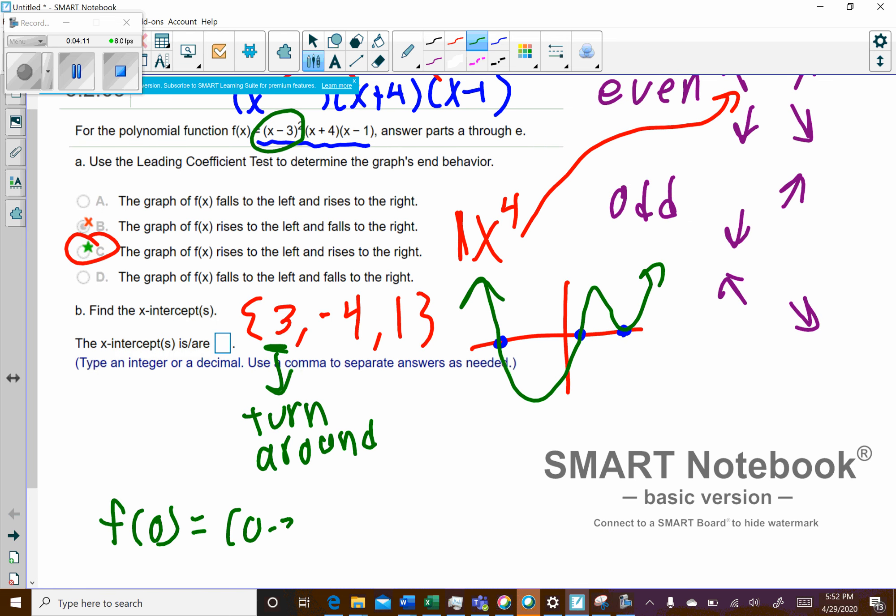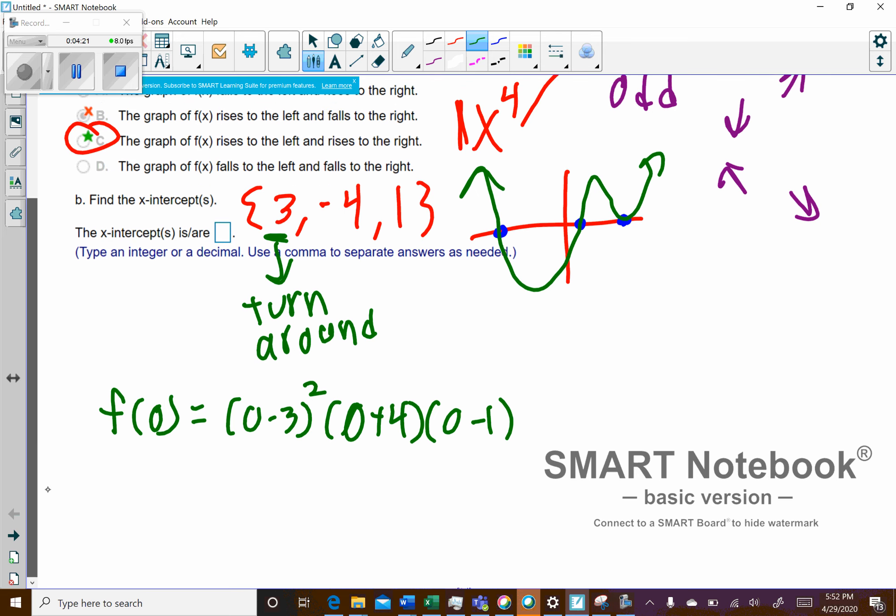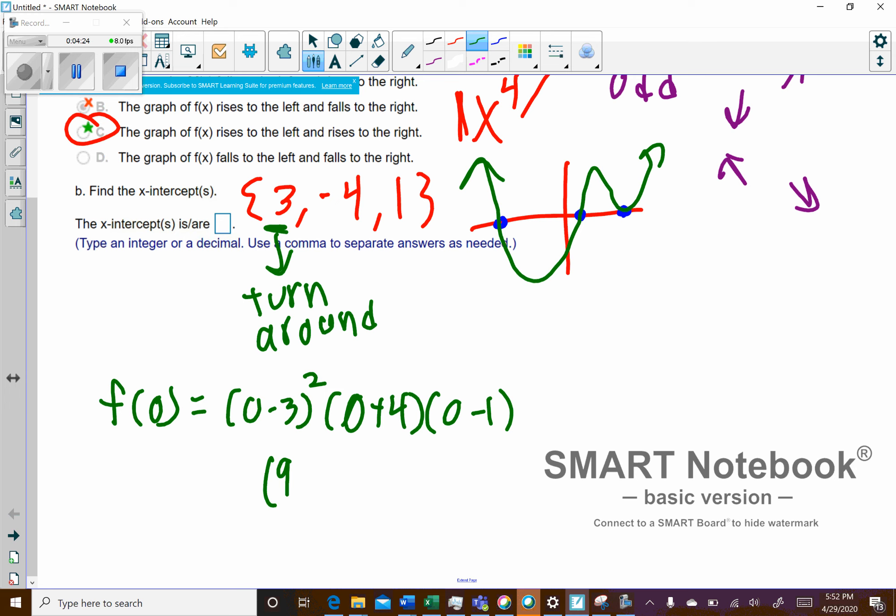So you're going to have 0 minus 3 to the power of 2, 0 plus 4 times 0 minus 1. And so what happens here is when you square this, this will become a positive 9. Then we'll have times 4 times negative 1. This will all come out to negative 36. So that would be my y-intercept.